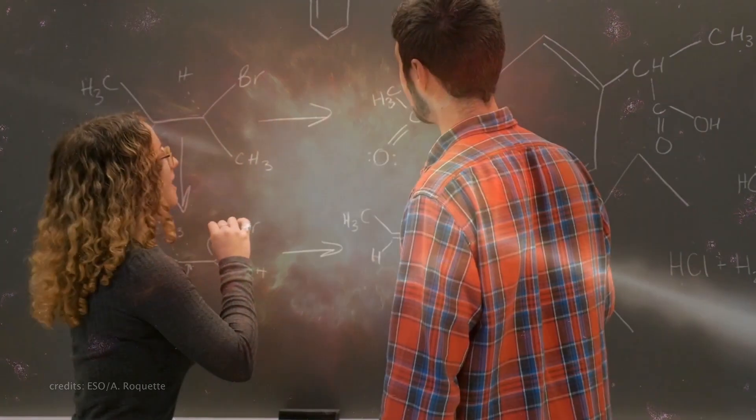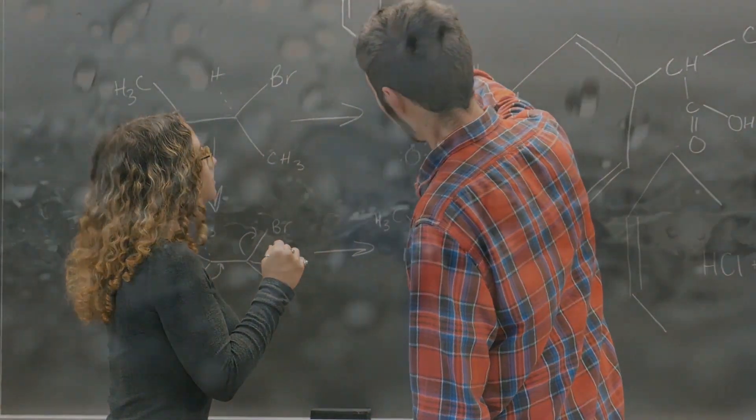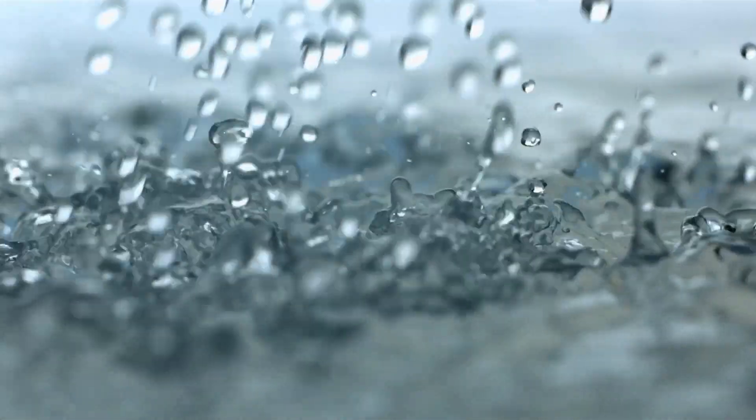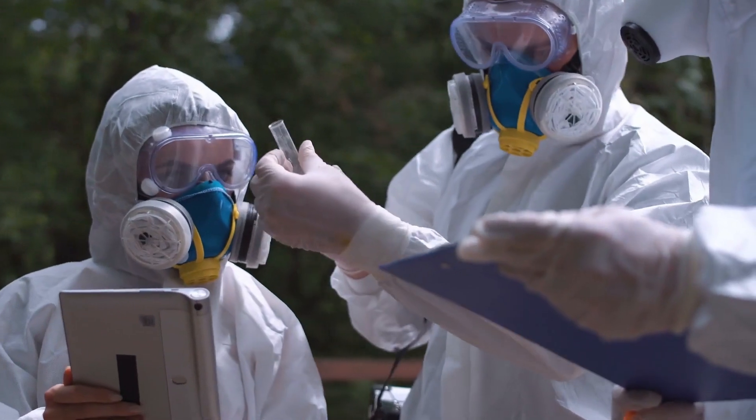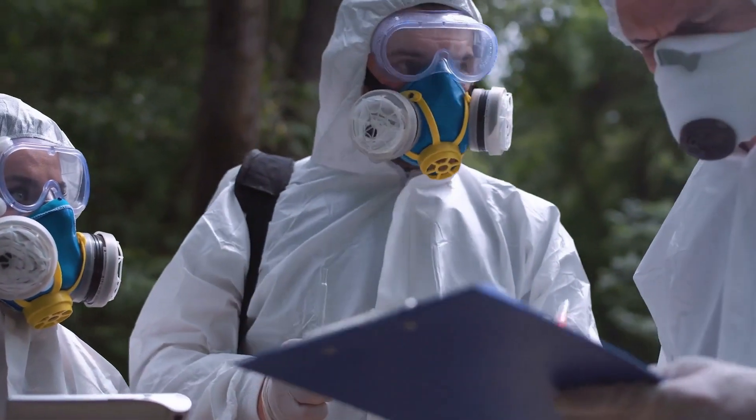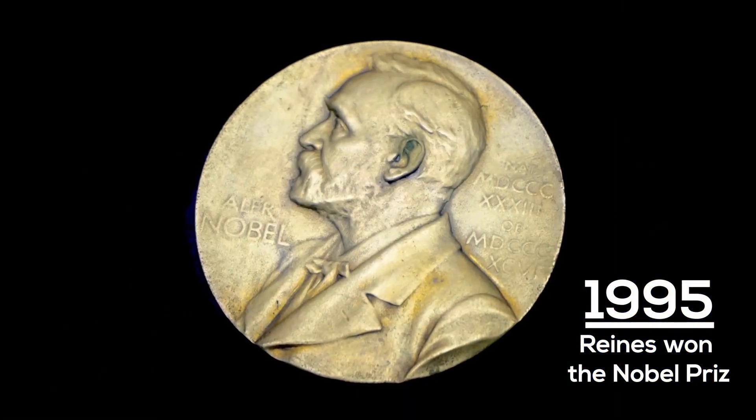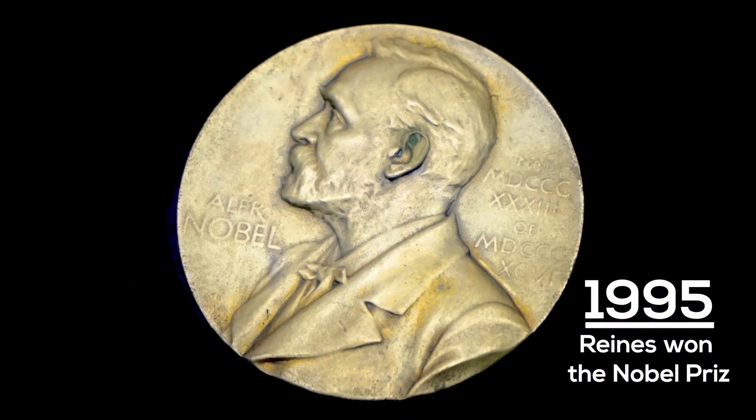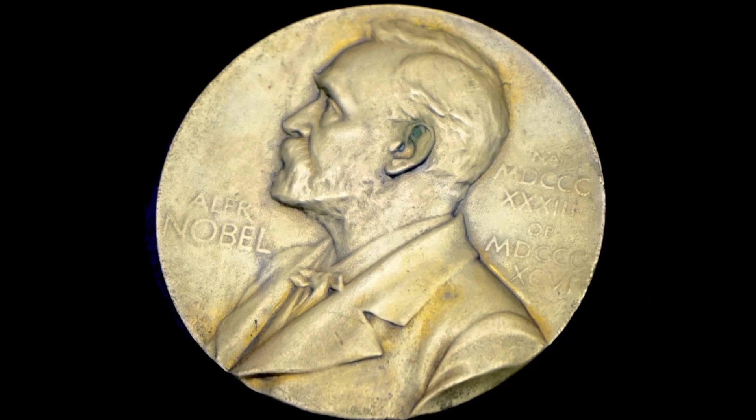To make you understand how seldom neutrinos interact with matter, think about the following. The apparatus used by Cowan and Rhinus contained 200 liters of water. But despite this huge amount of water used, they were able to observe only three neutrinos per hour. For this experiment, Rhinus won the Nobel Prize almost 40 years later, in 1995. Unfortunately, Cowan was already dead by that time.